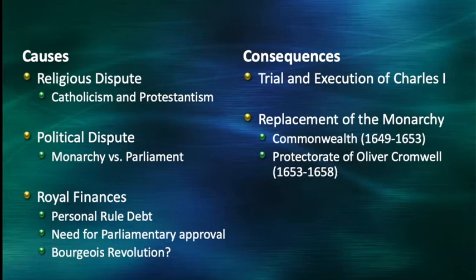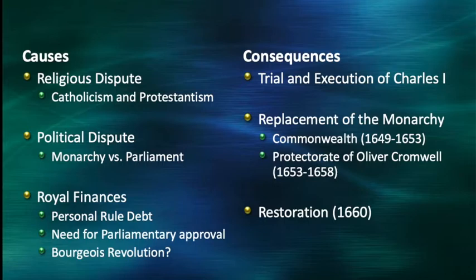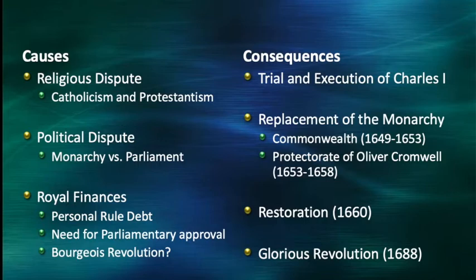The Stuart monarchy was restored in 1660 — parliament invited Charles II back under a revised constitutional framework to rule as monarch. Ultimately, this saga concludes in the Glorious Revolution of 1688, in which the Stuart monarchy would again be overthrown, this time by William of Orange, greatly empowering Parliament. We'll talk about this next week.